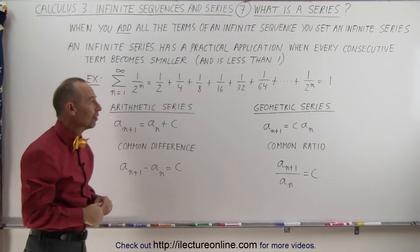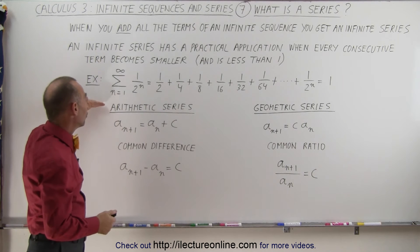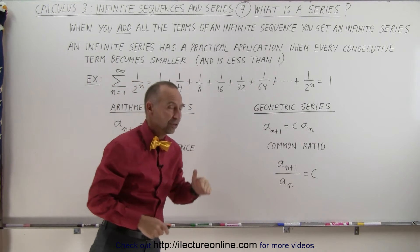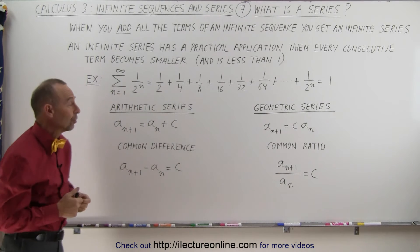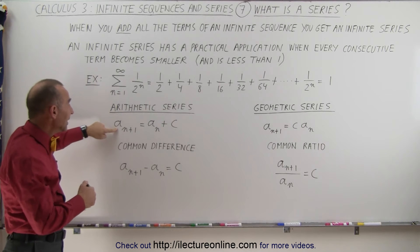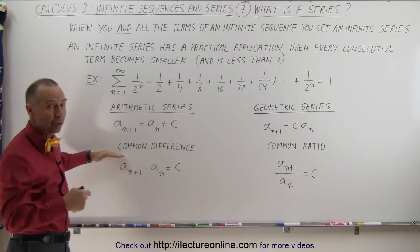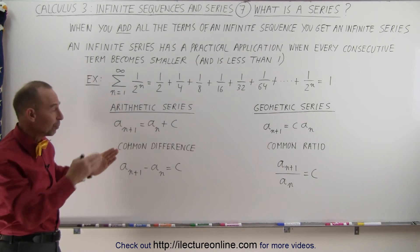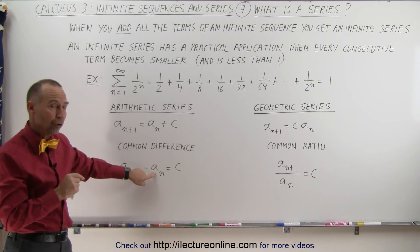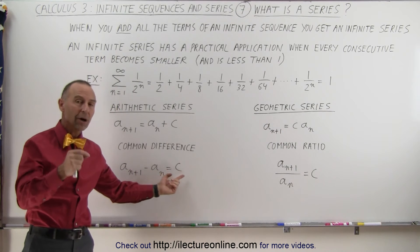Strangely enough, when you add them all together they add up to exactly 1, and we'll see some very interesting series like that. Now there are two main types of series. One is what we call the arithmetic series and the other is called the geometric series — there's a lot of similarity to the sequences we just talked about. An arithmetic series is simply where the next term in the series is the previous term plus a constant, so there is what we call a common difference between every single term. You subtract the previous term from the next term and the difference will always equal the same constant number.